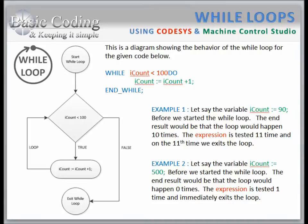For a second example, let's say the variable iCount equaled 500 before we started the while loop. The end result would be that the while loop would never execute the code inside the while loop. It would immediately exit the loop.